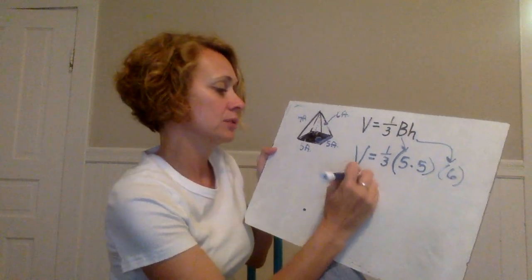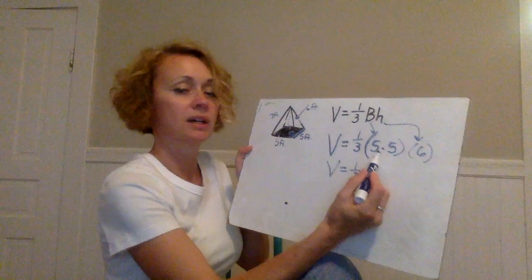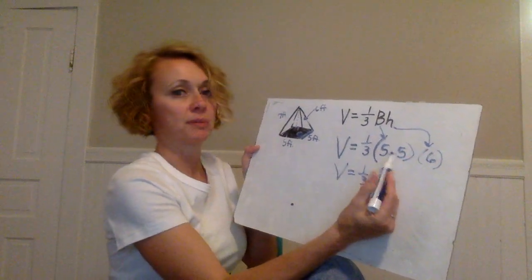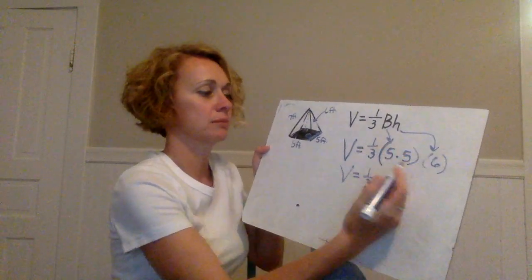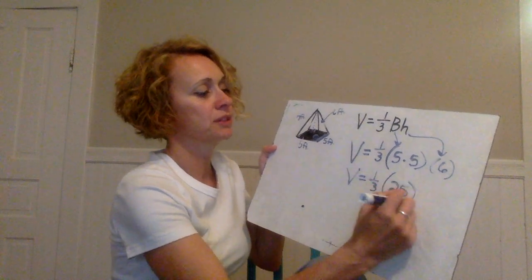Okay so now I'm going to work this out. I'm going to leave my one-third out there and I'm going to do my associative property right here first. Actually I'm going to go right here and multiply that stuff out. It gives me 25.